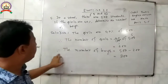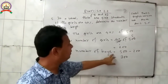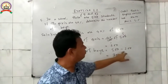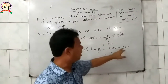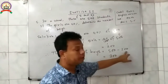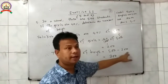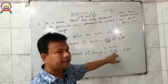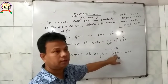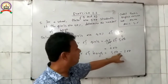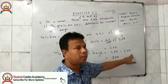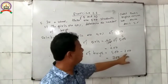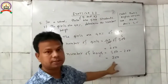So, the number of boys will be: total 500 boys and girls, minus 200 girls. The number of boys equals 500 minus 200, which equals 300. And this is the answer.